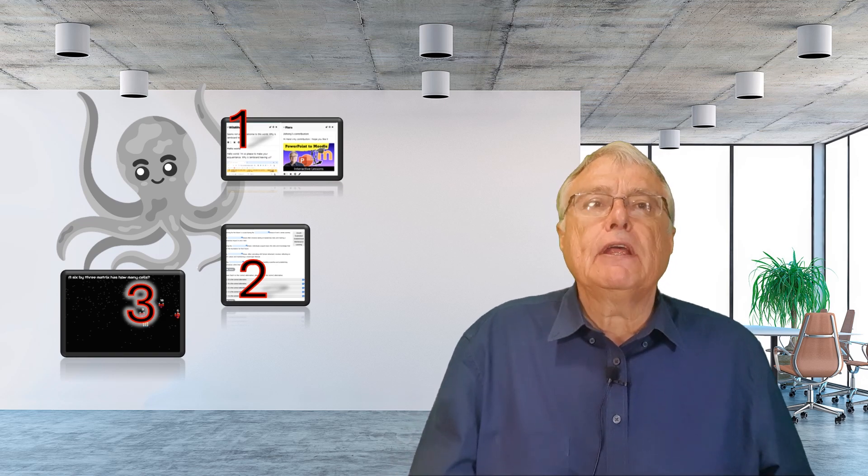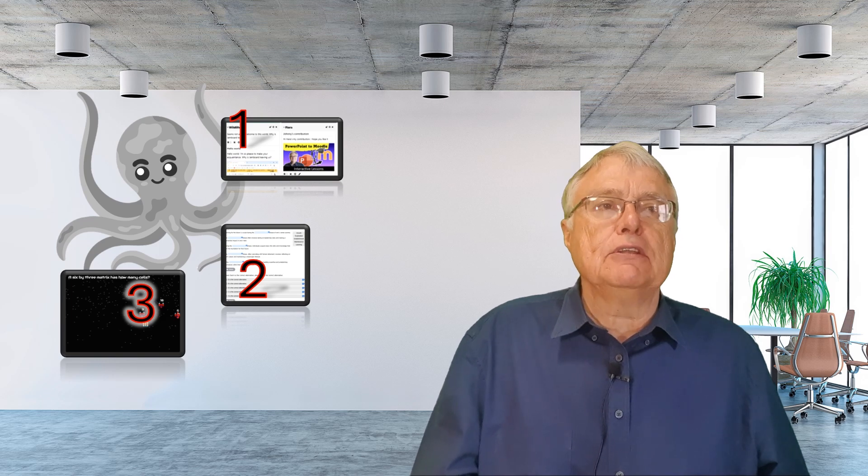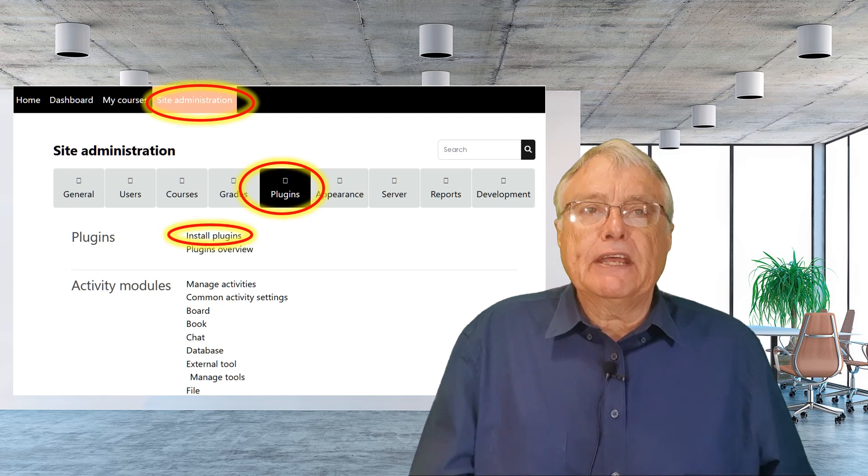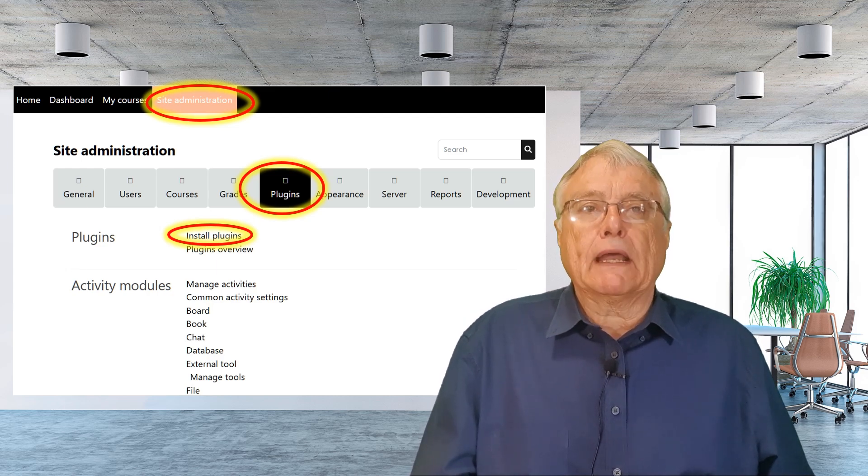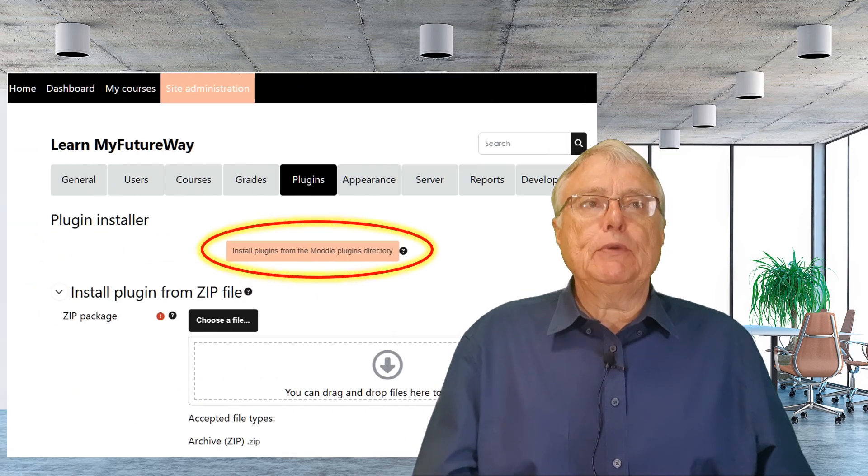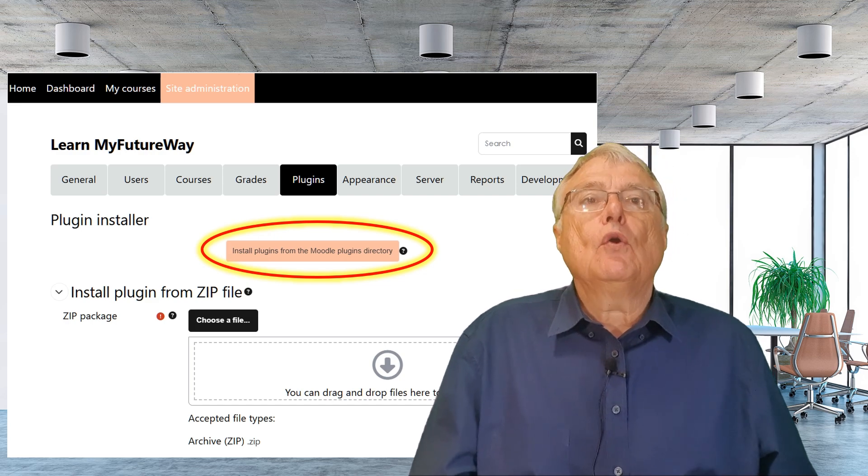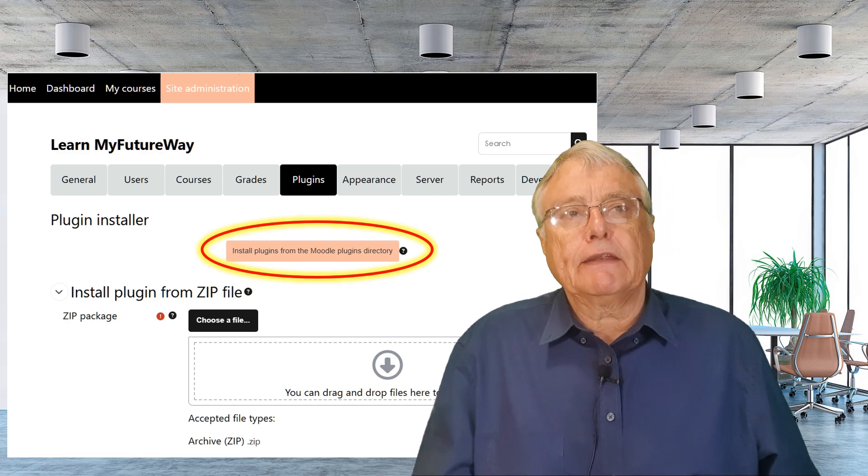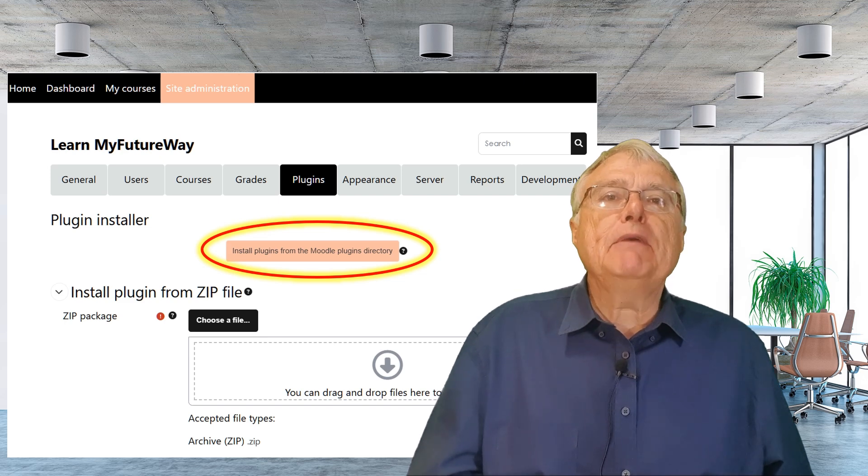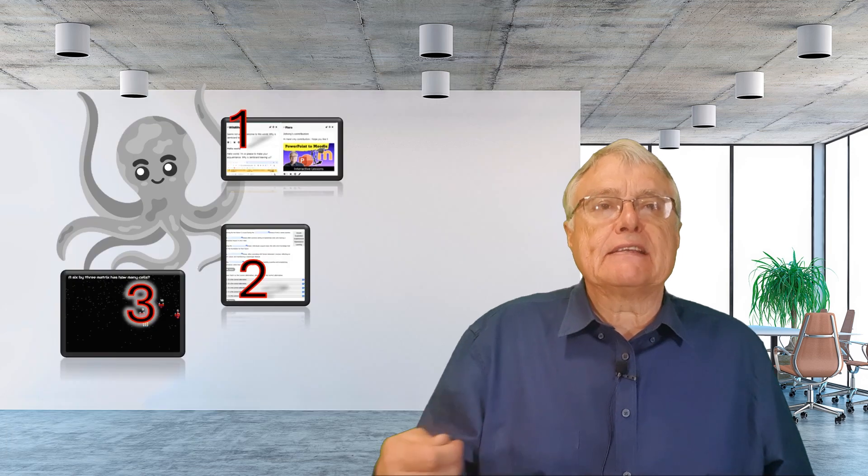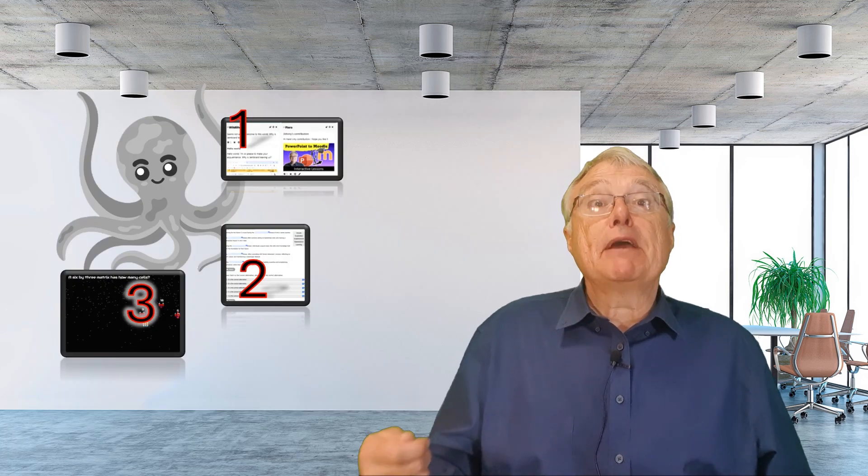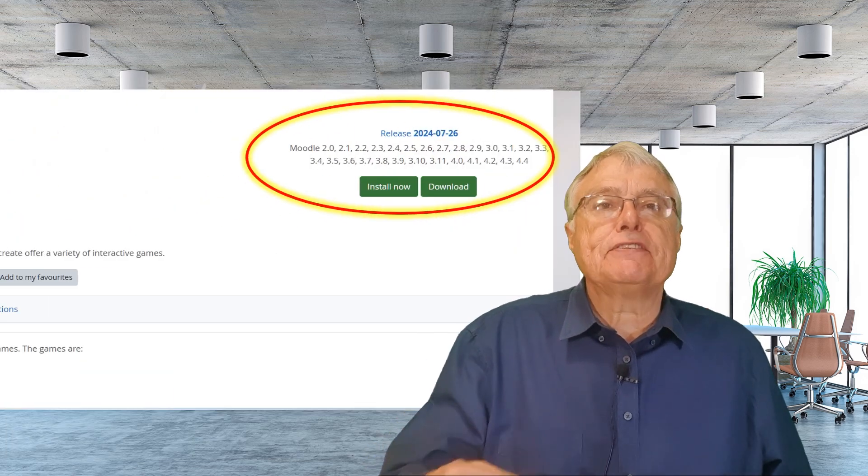As promised, here's a quick overview of how to download and install plugins in Moodle. If you're an administrator, start by going to Site Administration, then Plugins, and finally Install Plugins. You'll have the option to install the plugin either from a previously downloaded file or directly from the plugins directory. I recommend using the plugins directory because it allows you to search and find exactly what you need.